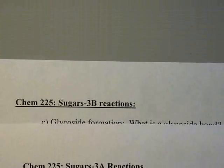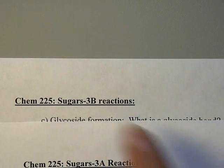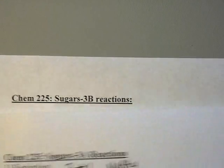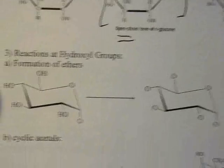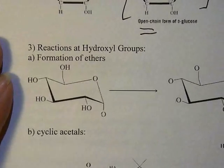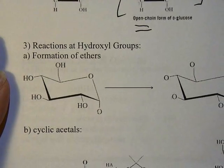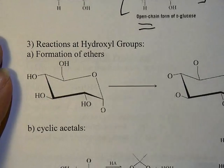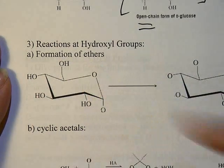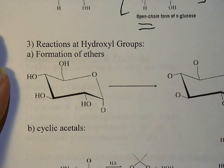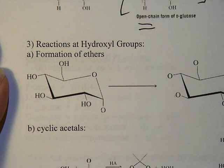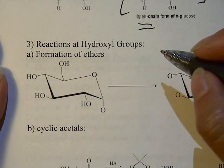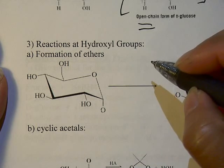This is the second lecture on sugar reactions — Sugars 3B. I want to finish up the first page, which covers reactions at hydroxyl groups, and move on to the next page. We're going to take a look at how these alcohols can form ethers. A lot of times this kind of chemistry is used as protecting groups to do further chemistry.